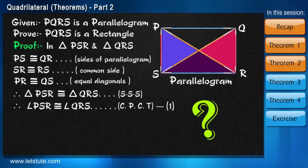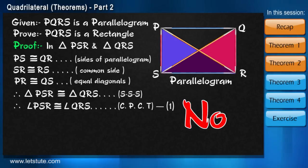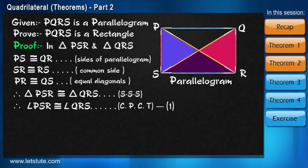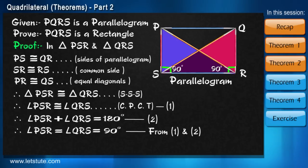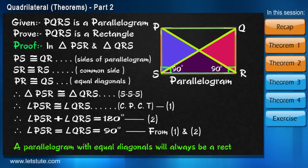Are we done? No. We are yet to prove the angles are of 90 degrees. If we notice they are interior angles and we know that addition of interior angles of a parallelogram is 180 degrees. That means each must be of 90 degrees. And thereby we proved that a parallelogram with equal diagonals will always be a rectangle.